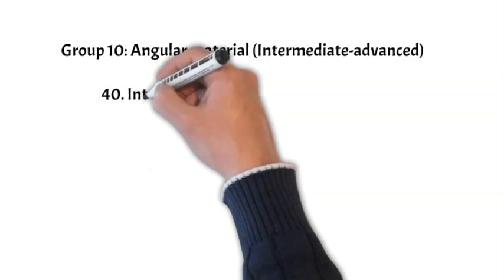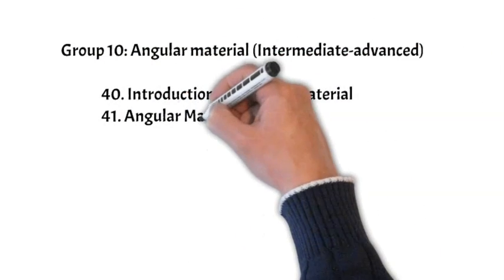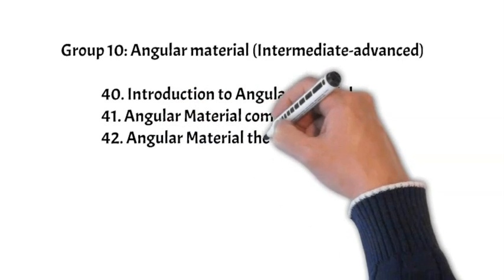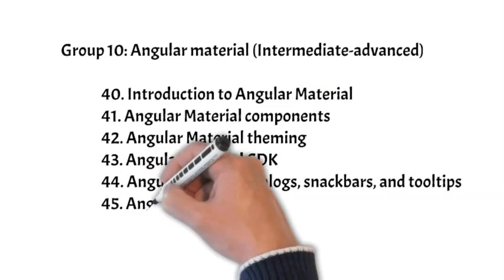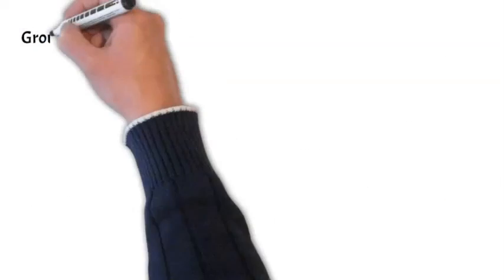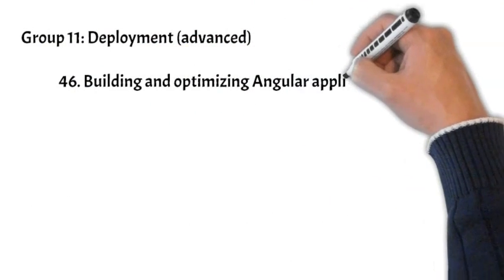In group ten, we will see introduction to Angular Material, Angular Material components, its theming, CDK, and Angular Material dialogues, snack bars, and tooltips, and then data tables. Then we have a last group in which we will talk about building and optimizing Angular applications for production.